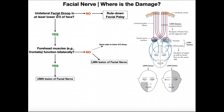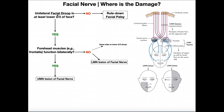Now we can go back and look at the flowchart. Does the person have unilateral facial droop in at least the lower two-thirds of the face? If no, you can probably rule out a facial palsy — damage to the facial nerve. If yes, you look at the forehead muscles and see if they're functioning bilaterally. If they are functioning bilaterally — answer yes — that's indicative of an upper motor neuron lesion, because in that lesion we only have droopage on the contralateral face with forehead muscles preserved. If they're not functioning bilaterally — answer no — then you have a lower motor neuron lesion with the entire half of the head and face drooping, ipsilateral to the lesion.